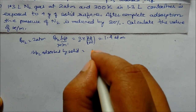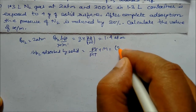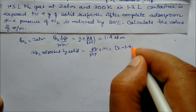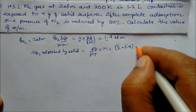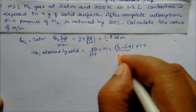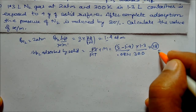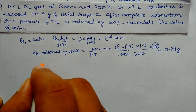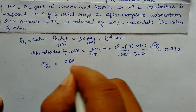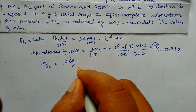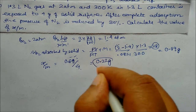Weight of nitrogen adsorbed using ideal gas equation: w equals (P × V × M) / (R × T). Pressure adsorbed is 2 minus 1.4 equals 0.6 atm, volume is 1.3 liters, molecular mass of nitrogen is 28, R is 0.0821, T is 300 K. Solving gives 0.89 grams of nitrogen adsorbed. So x/m equals 0.89/4 equals 0.22 gram per gram.